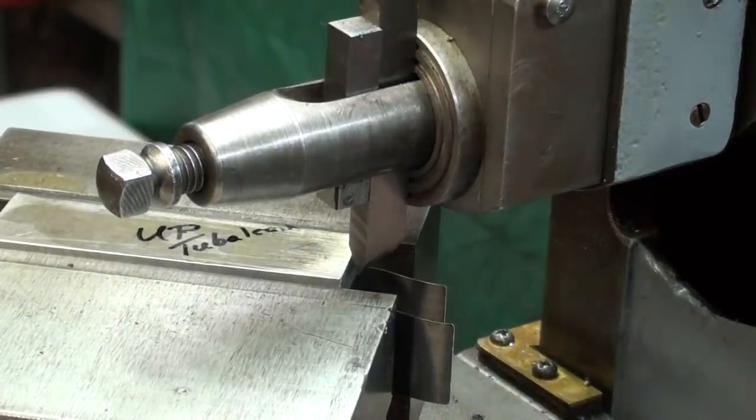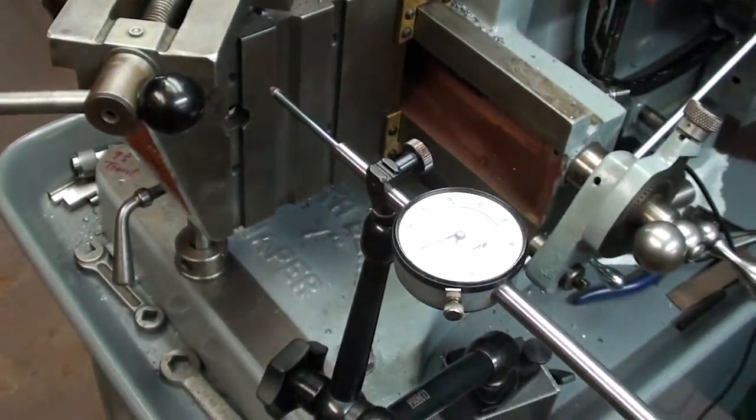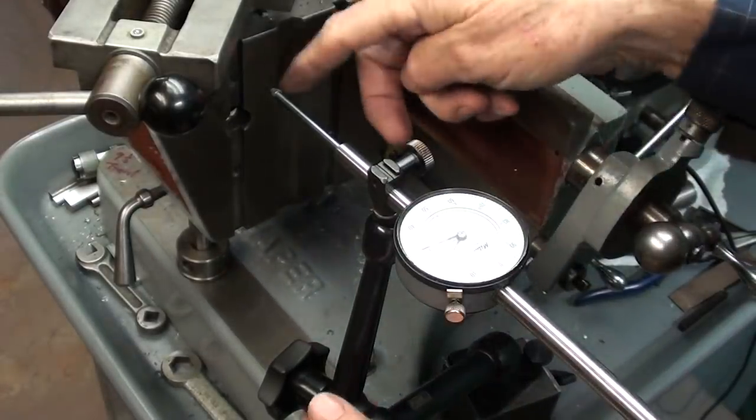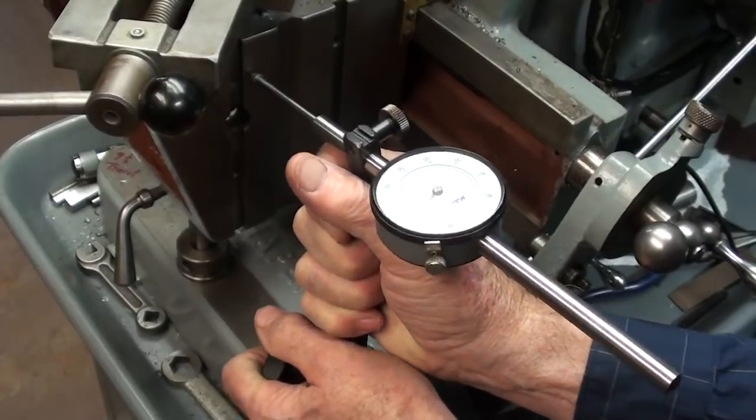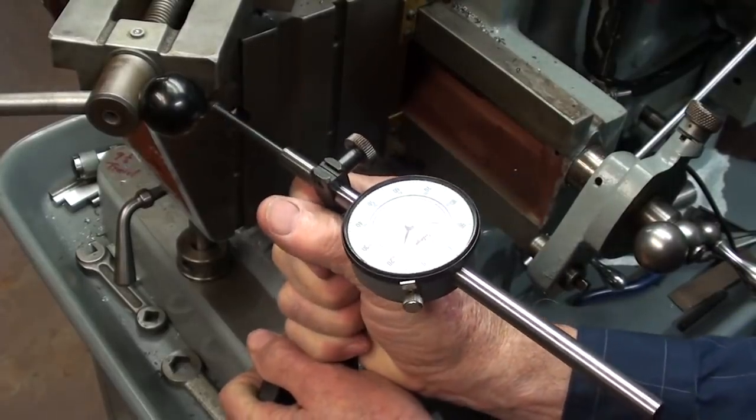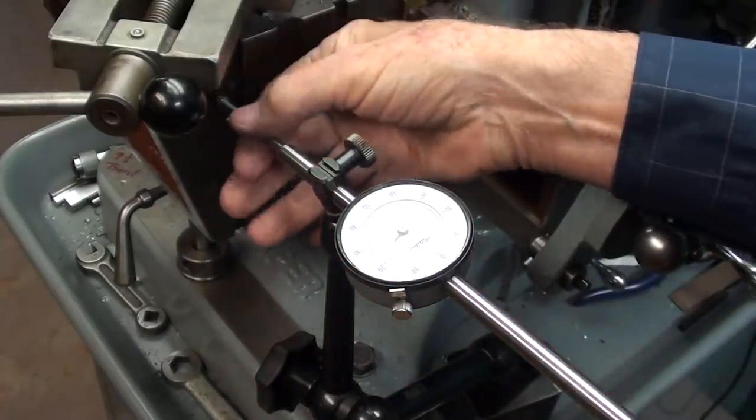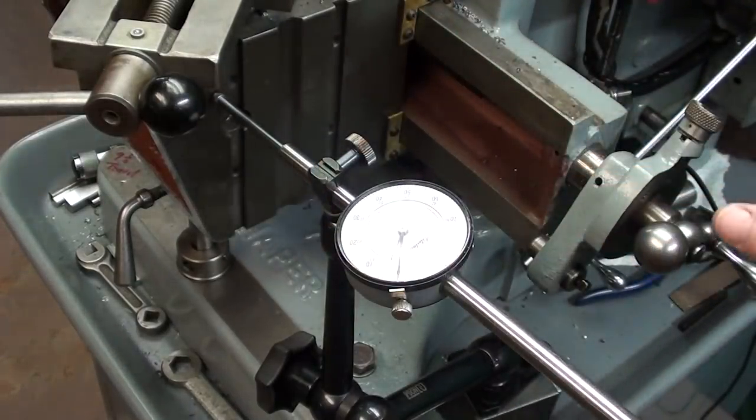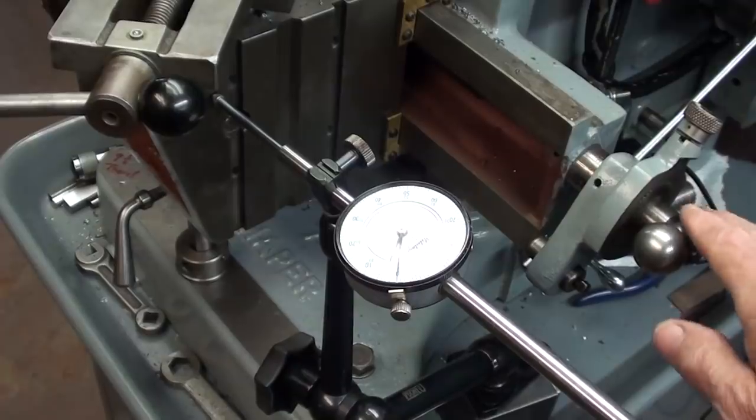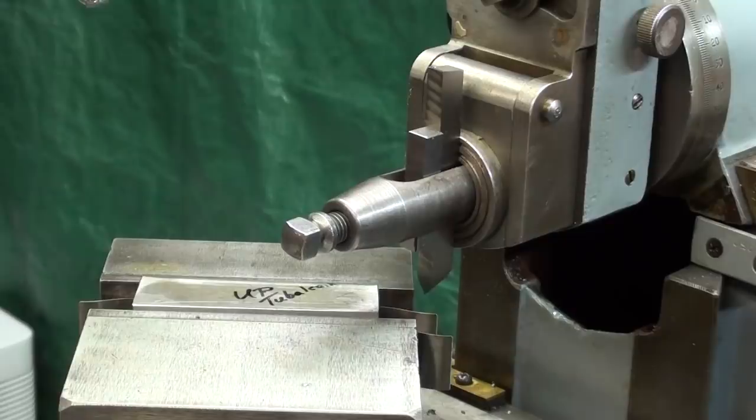I positioned the tool for the first cut, just on the corner there, and now I am going to set my dial indicator into the table here, so it is just barely touching. Perpendicular if I can. See, it is contacting, and then I zero it out. I will take the first cut at zero, and then I will move, each time, 75 thousandths. Alright, here is the first cut.